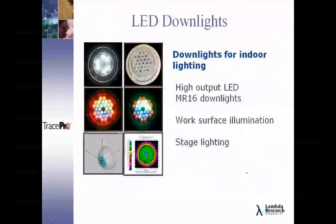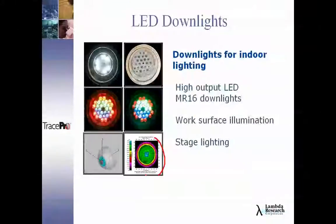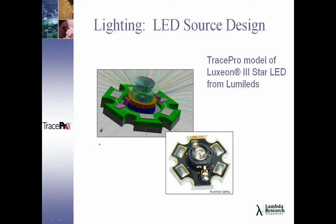TracePro can be as sophisticated as you need. For instance, you can model a whole range of different LED downlights, specify all their spectral characteristics, and see exactly how they would perform before building anything. You can then iterate the design to achieve the desired output. Applications include stage lighting, work surface illumination, headlamps, and tail lamps. You can even get into the internals of the LED chip, modeling fluorescence and phosphors to create a complete chip model.